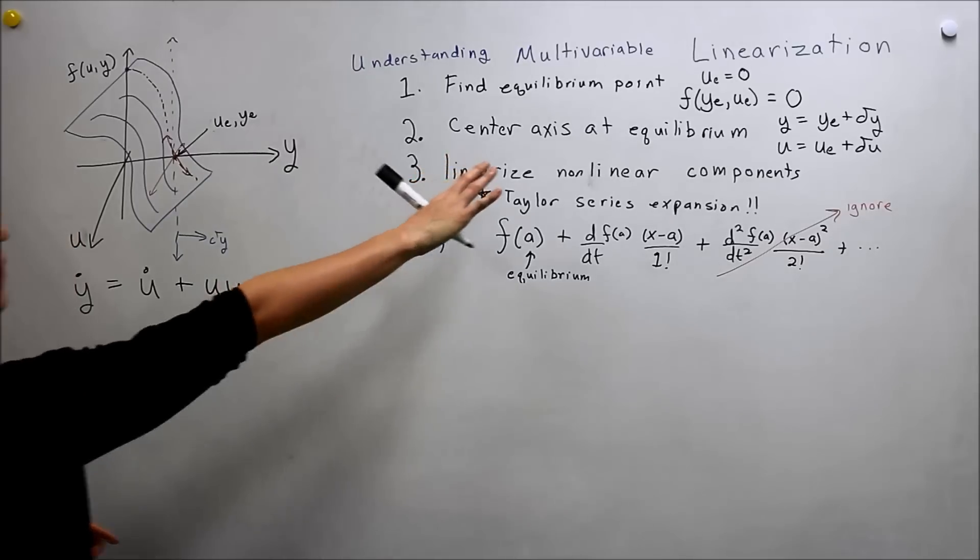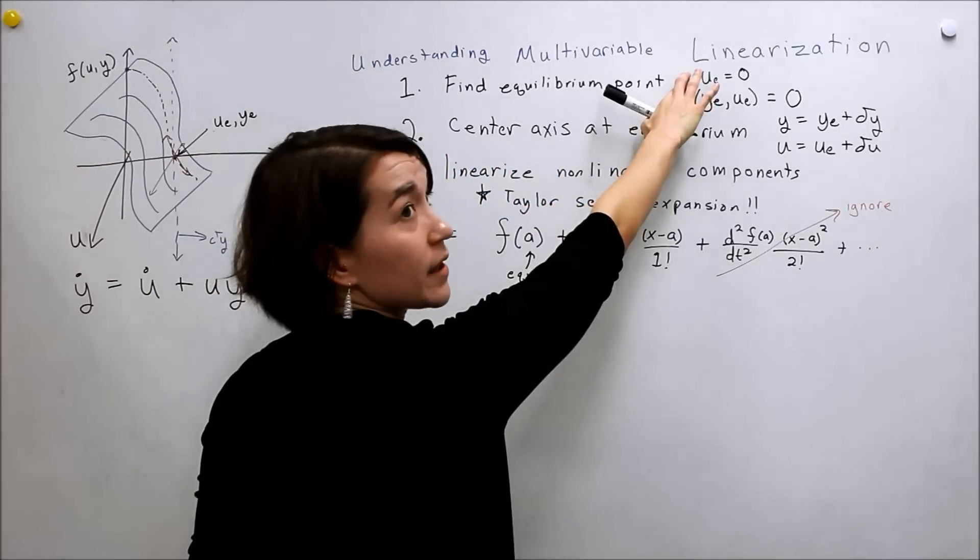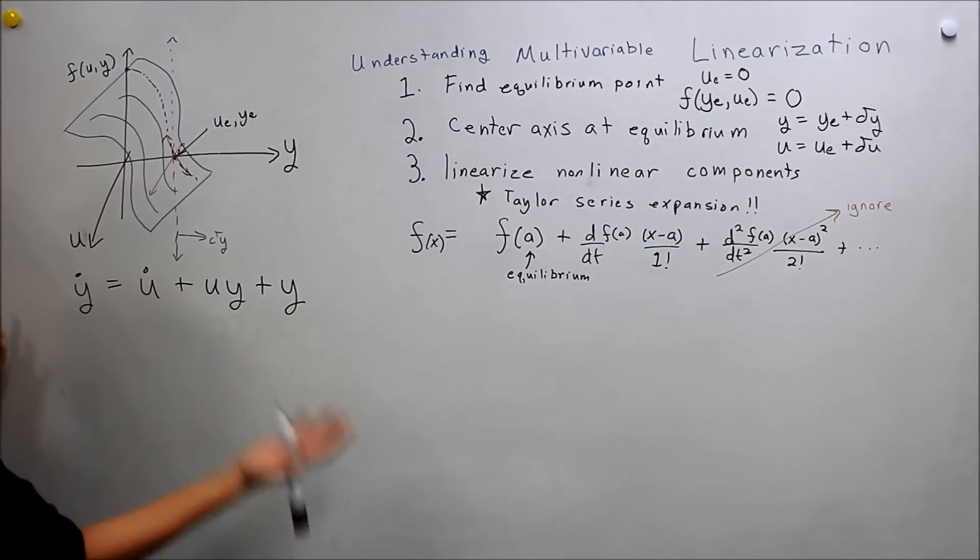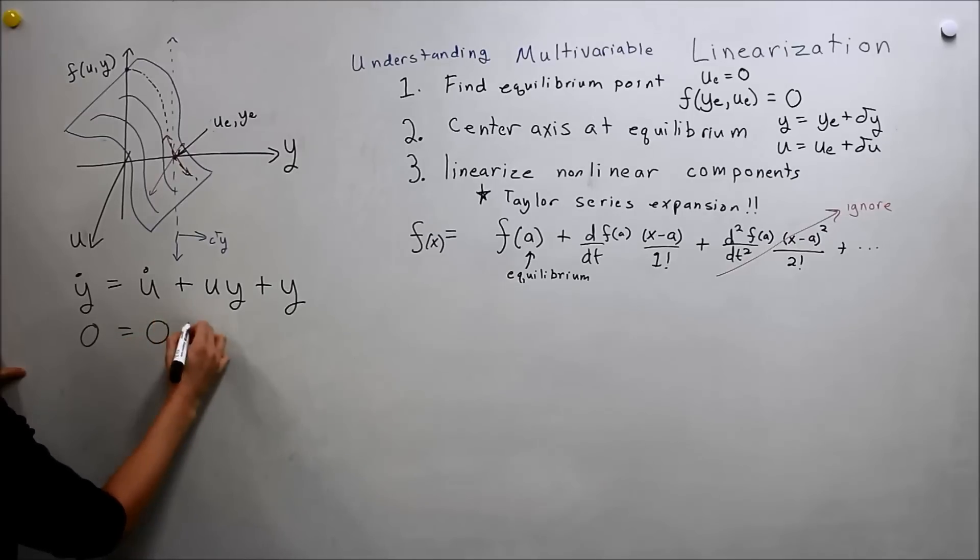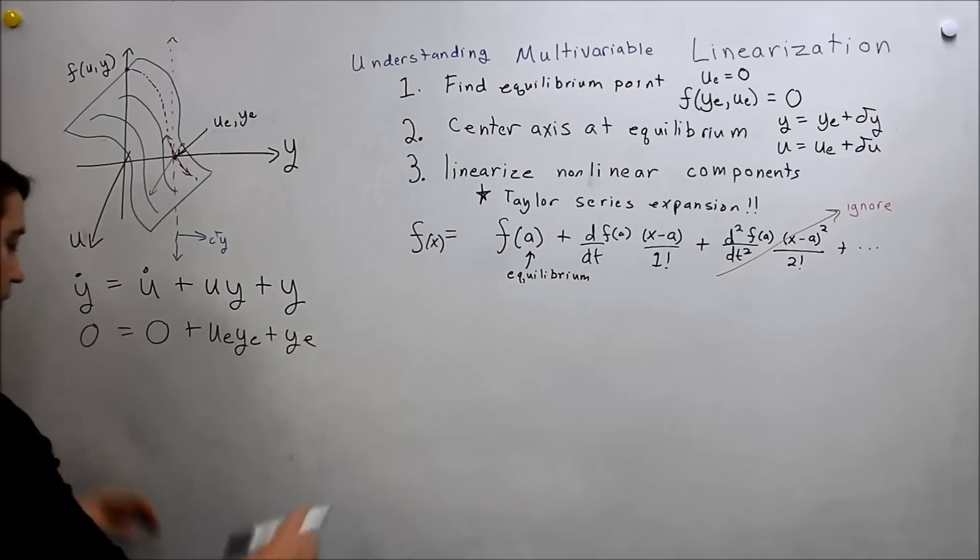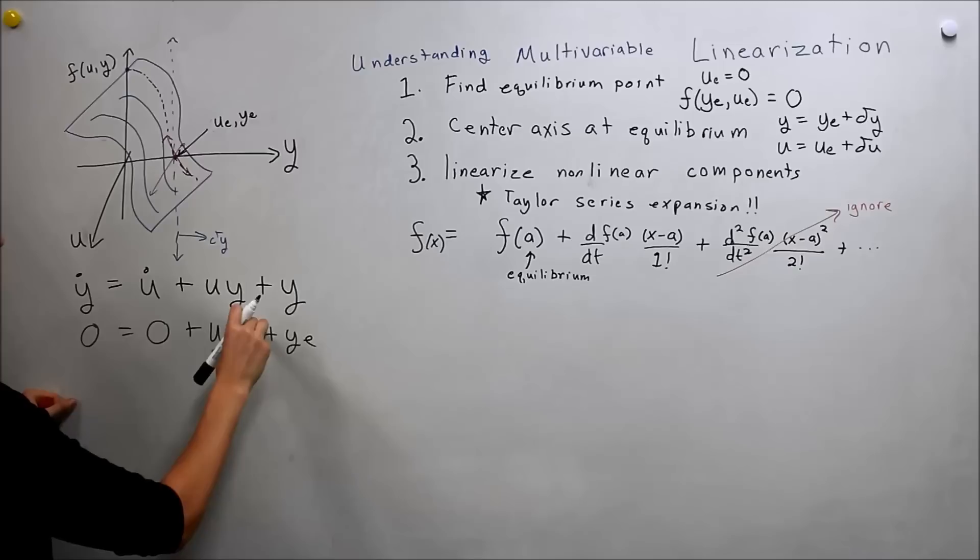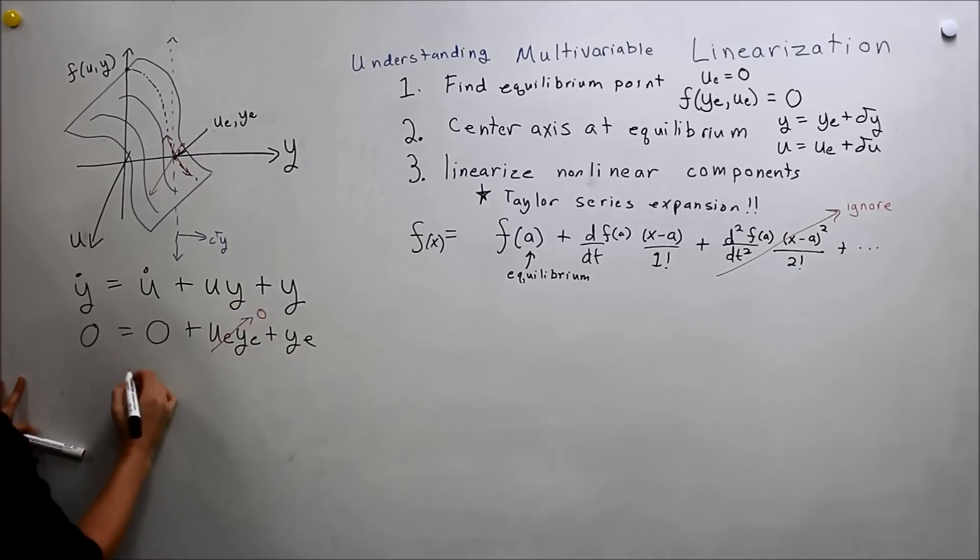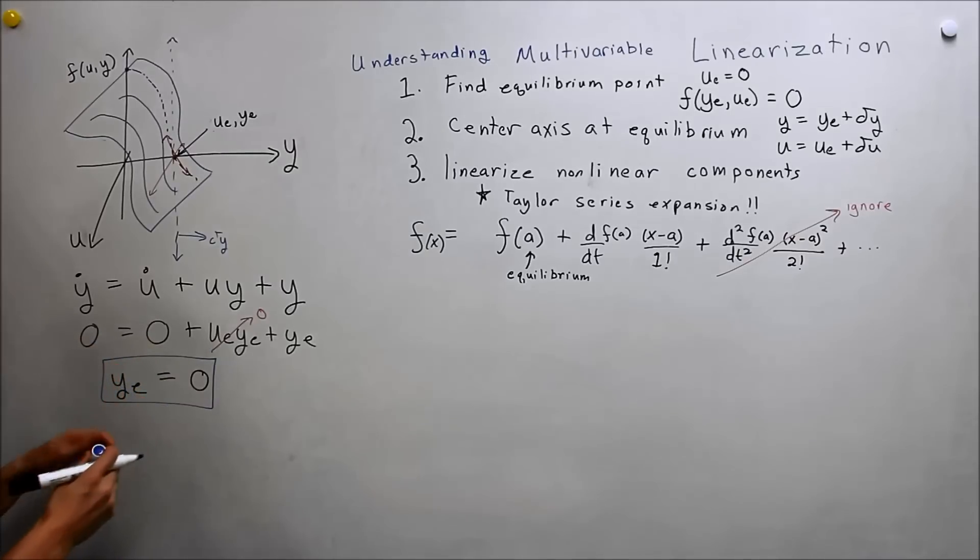So first what we can do is find the equilibrium point. So let's do this over here. We make our variable u_e, make u equal to zero. And then any higher order of derivatives will also be zero. So zero equals zero plus u_e y_e plus y_e. We know that u_e is zero. So we make that zero. And then we see that y_e, the equilibrium point, is simply equal to zero. This is a relatively easy function to solve for. So now we know our equilibrium points for both u and y.